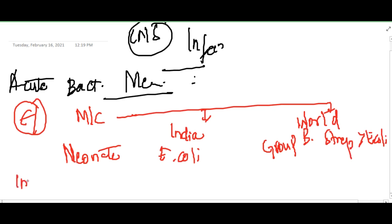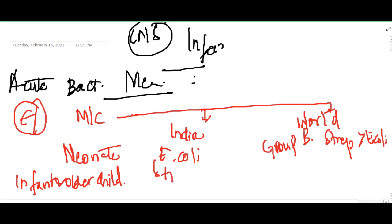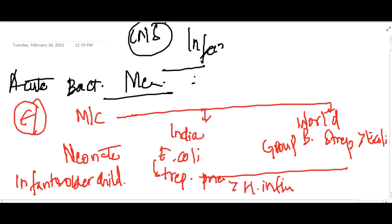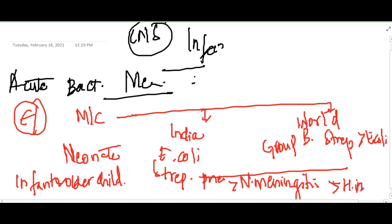The most common bacterial cause of acute bacterial meningitis in infants and older children — in India or in the world — is Streptococcus pneumoniae, followed by Neisseria meningitidis, followed by Haemophilus influenzae, in both India and in the world.